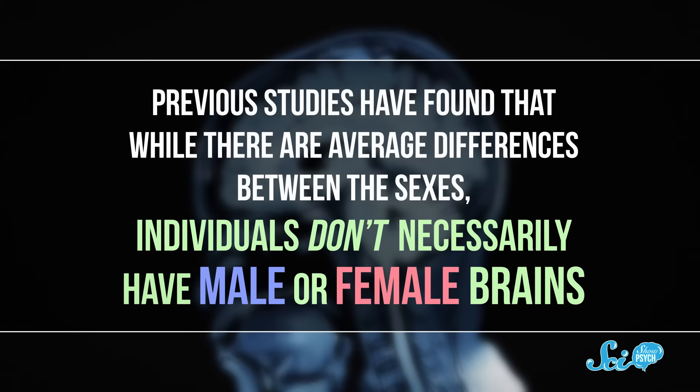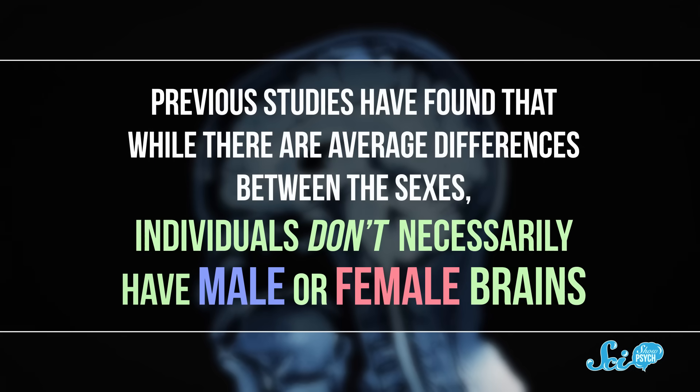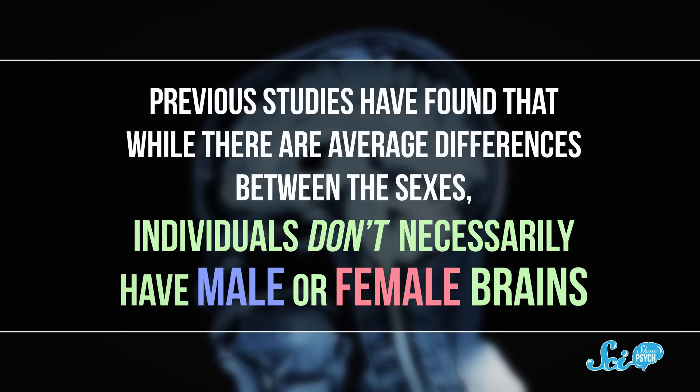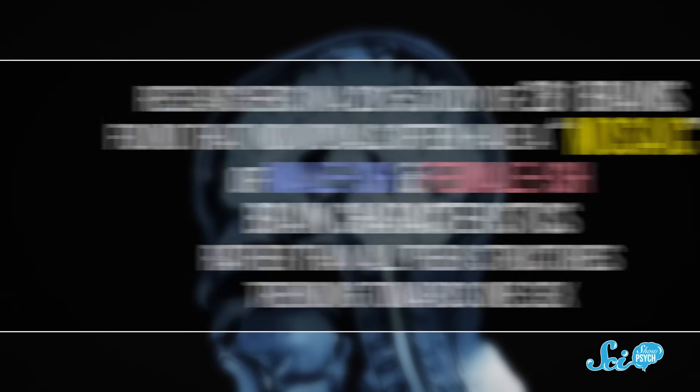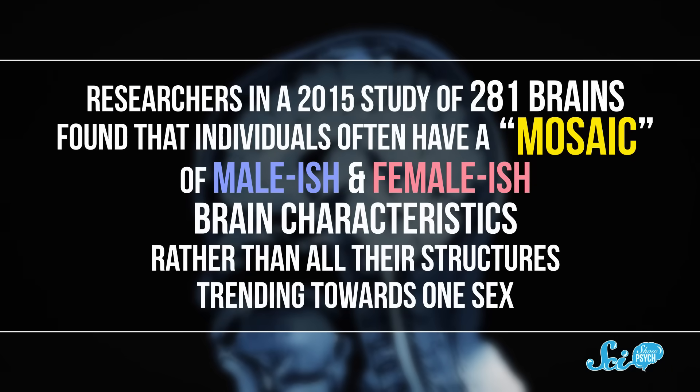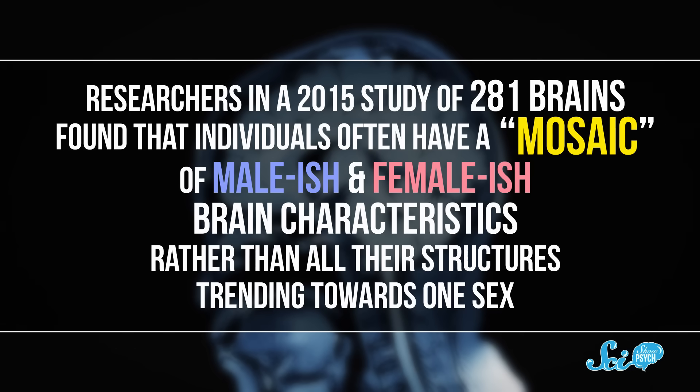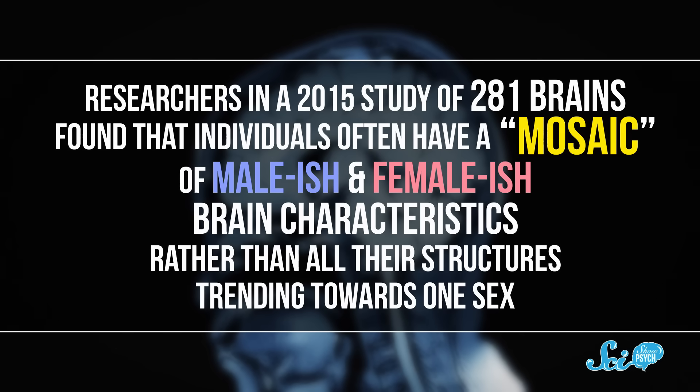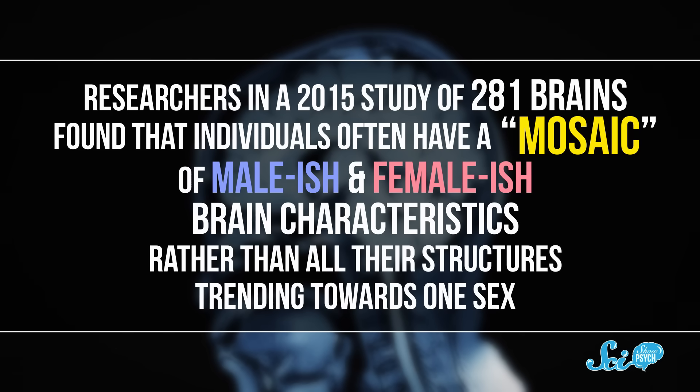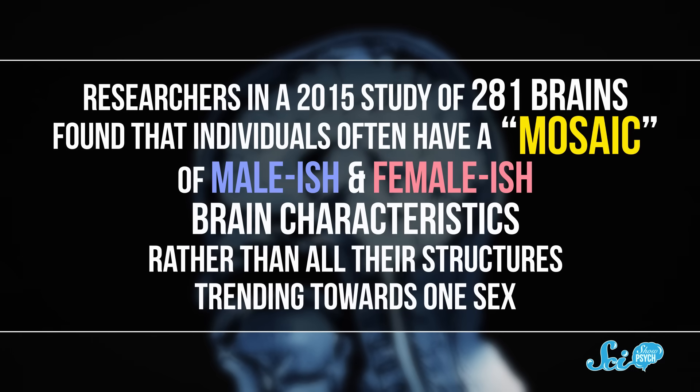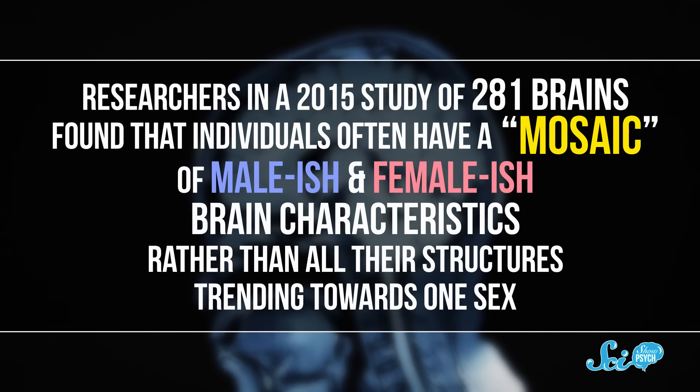So if a particular structure was really big or really small, it might be associated with a particular sex. But plenty of different sizes for a given structure could be considered totally normal for males or females. And previous studies had found that while there are average differences between the sexes, individuals don't necessarily have male or female brains. Researchers in a 2015 study of 281 brains found that individuals often have a mosaic of male-ish and female-ish brain characteristics, rather than all their structures tending toward one sex.